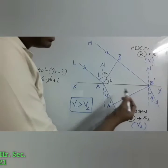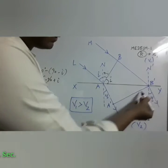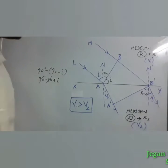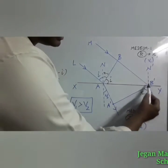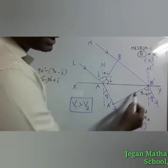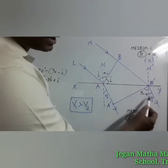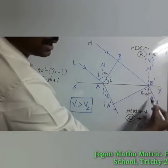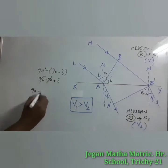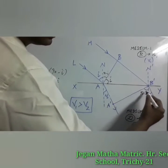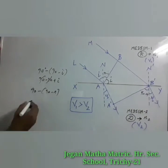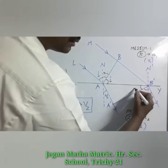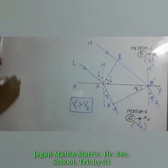Likewise, we find the angle between the refracting surface and the refracted wavefront. The refracted ray and refracted wavefront are perpendicular to each other, so that angle is 90 degrees. Subtracting the angle r gives 90 minus r. Then 90 minus (90 minus r) = r. So the angle between the refracting surface and the refracted wavefront is r.